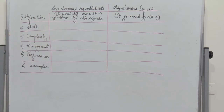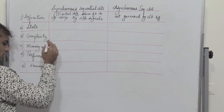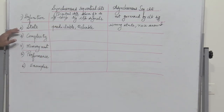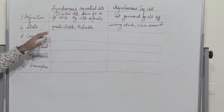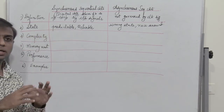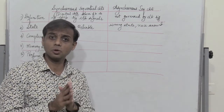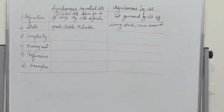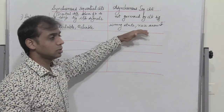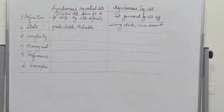When we talk about the state, the states of all synchronous sequential circuits are always predictable and reliable. Whereas in asynchronous sequential circuits, there are chances that the circuits may enter into a wrong state because of the time difference of arrival of different inputs. Thereby a race around condition may exist.